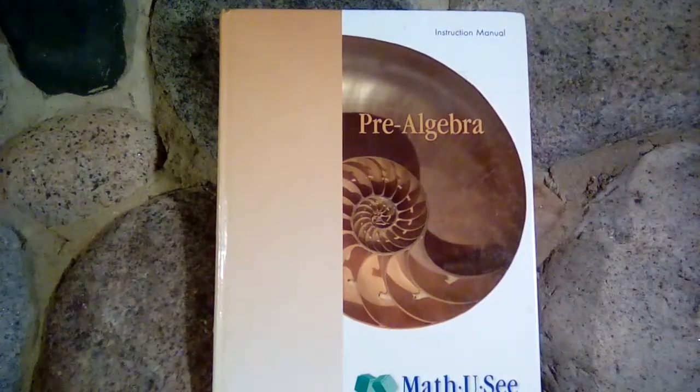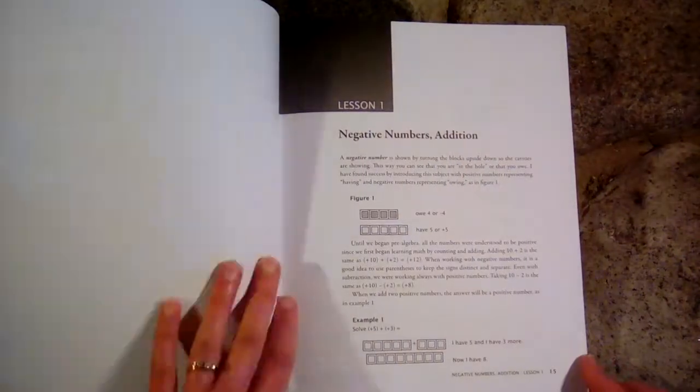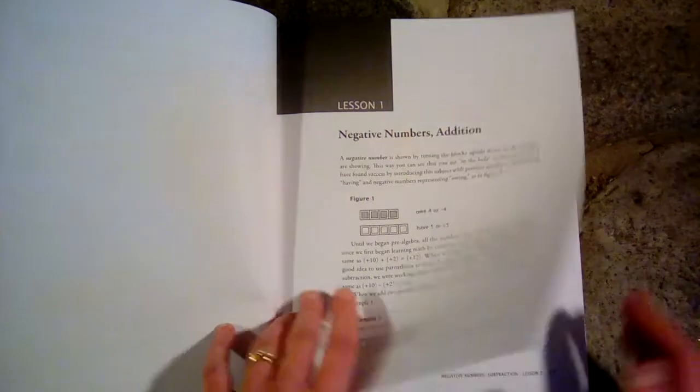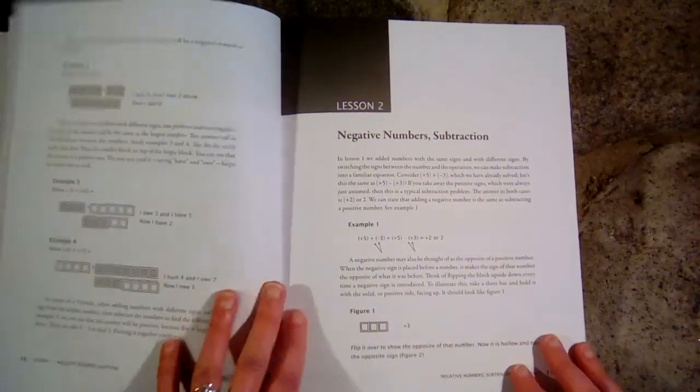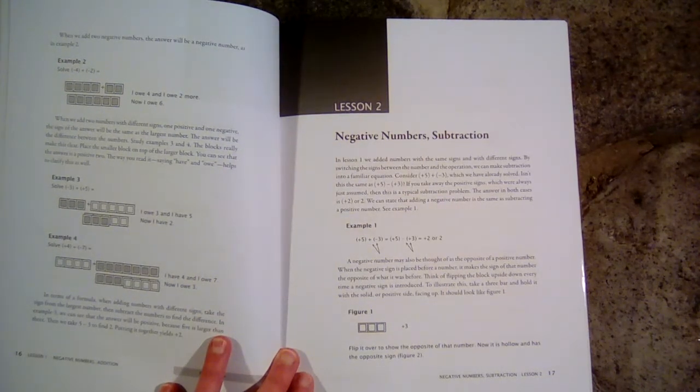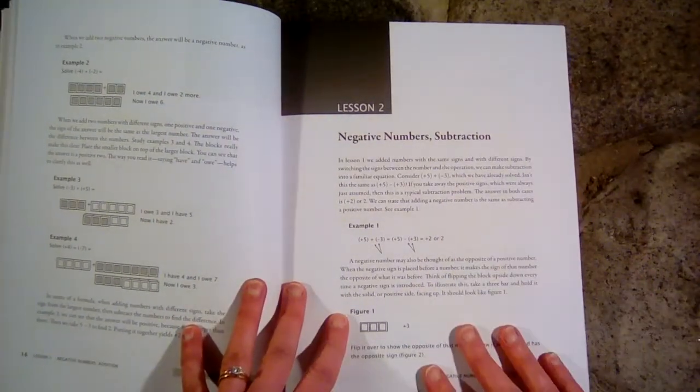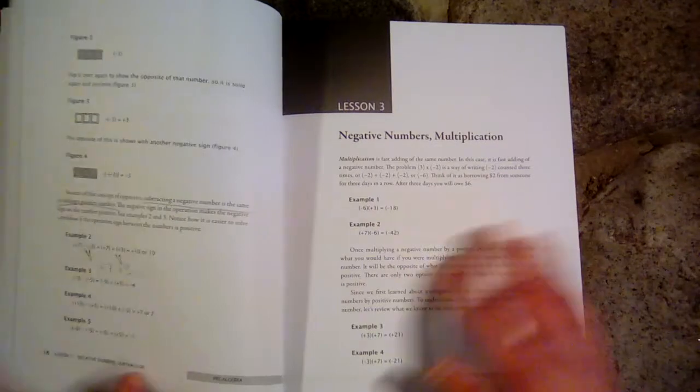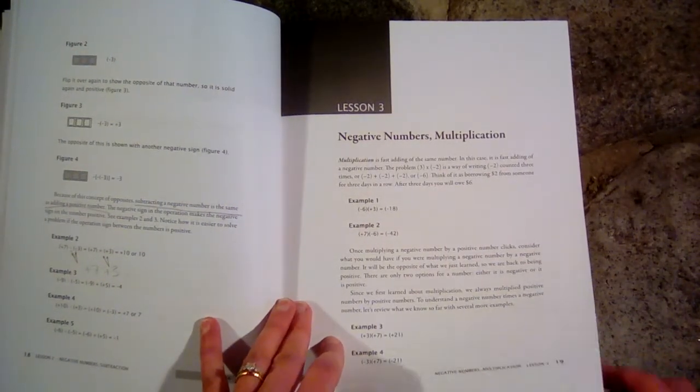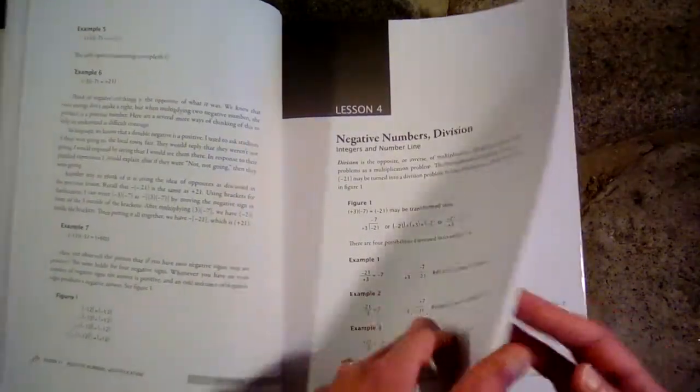So let's first look at the instruction manual. The student is going to be watching the lesson on the DVD, but it is nice to have the instruction manual because that lesson is also explained here with examples. So my daughter usually watches the DVD and understands it from there, but occasionally if there's anything that she has some trouble with, I will look in here and see what she has learned. It really helps me know what she's been watching on the DVD and helps me to help her better. So I really like these for when I need them.